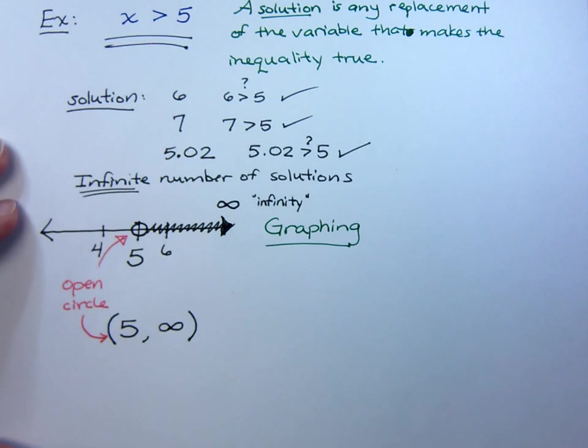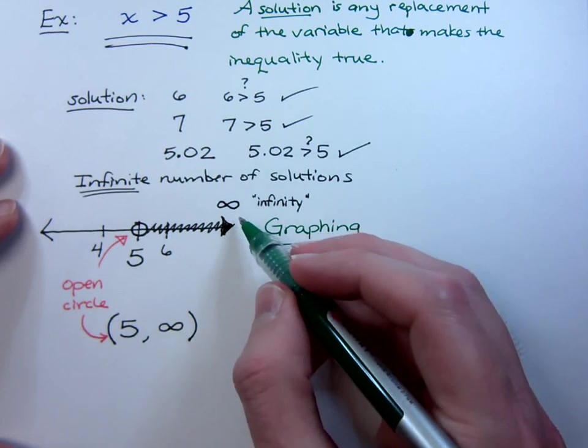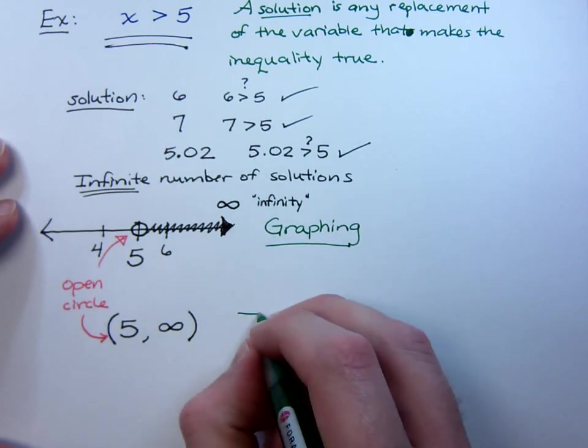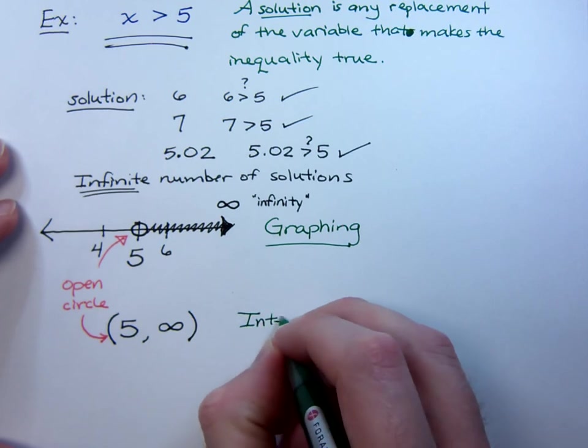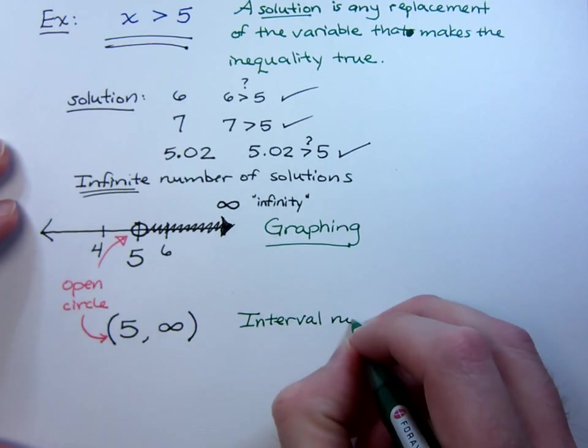So, an open circle on the graph means parentheses in the interval notation. Any time you have infinity, infinity will always have parentheses. So, this is what your solution would look like when you use interval notation.